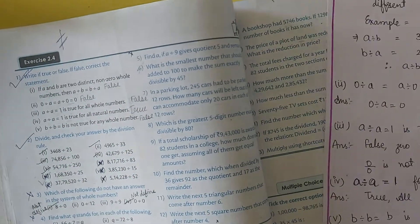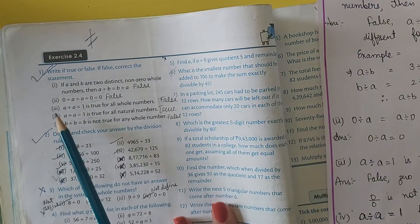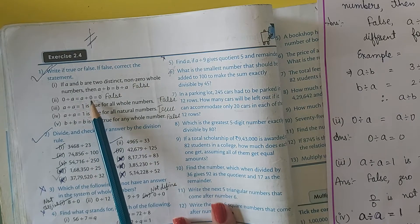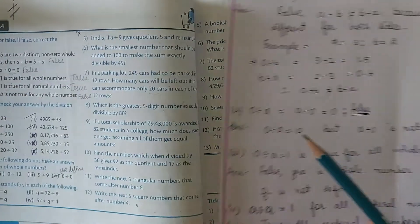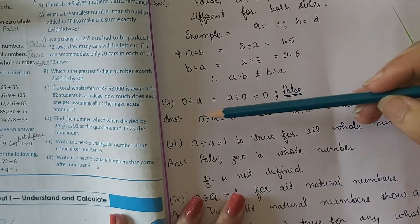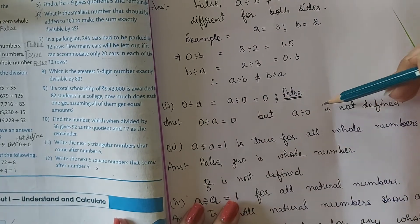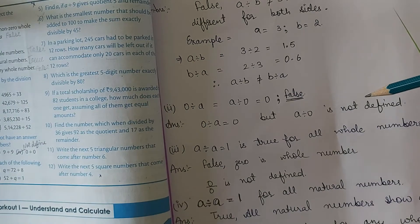Next is statement number 2: 0 divided by A equals A divided by 0 which equals 0. This is again false. 0 divided by A is always 0, but A divided by 0 is not defined.